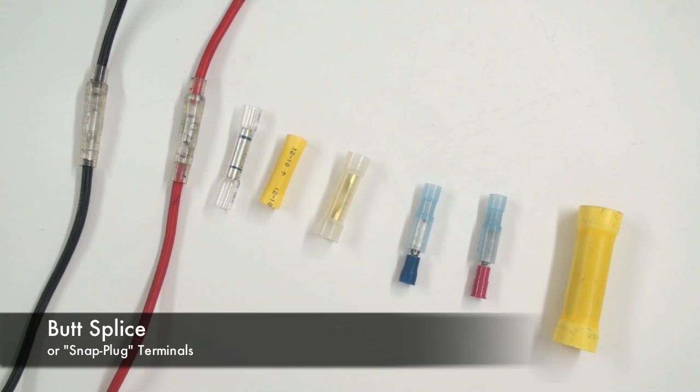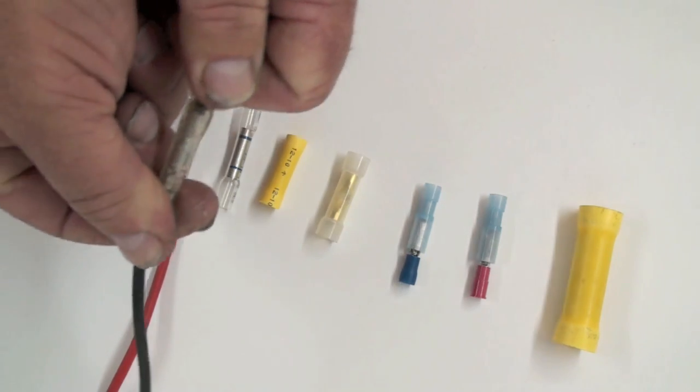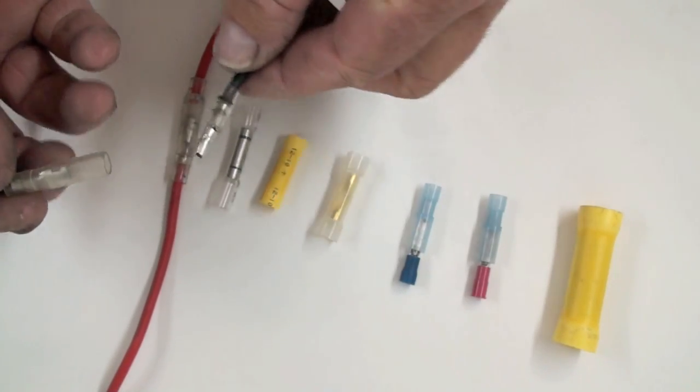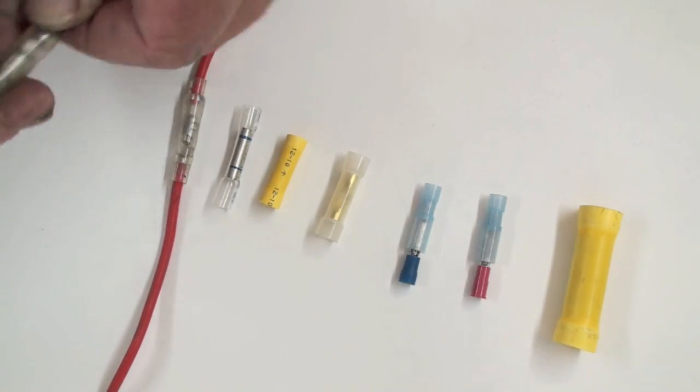These are butt splices or snap plugs and they come in a variety of different sizes for different sized wires. This is a very large one for 4 gauge and this is for 10 to 12 gauge. They typically have a male and a female component and snap apart. This one is a waterproof variety and they quickly snap back together.